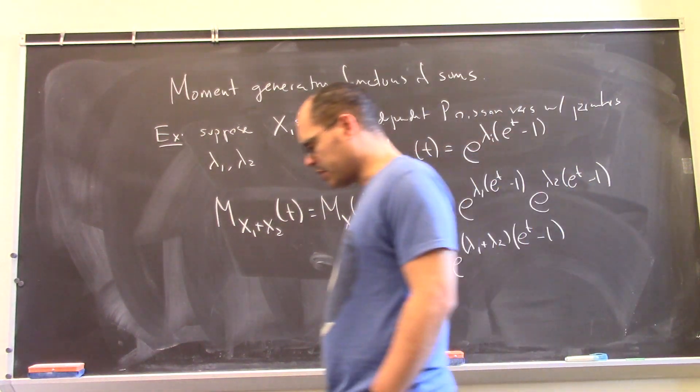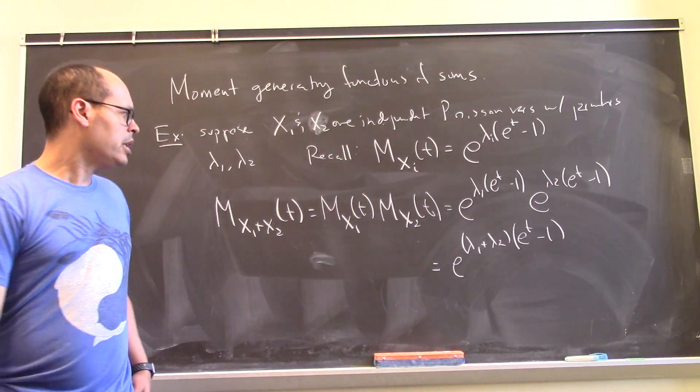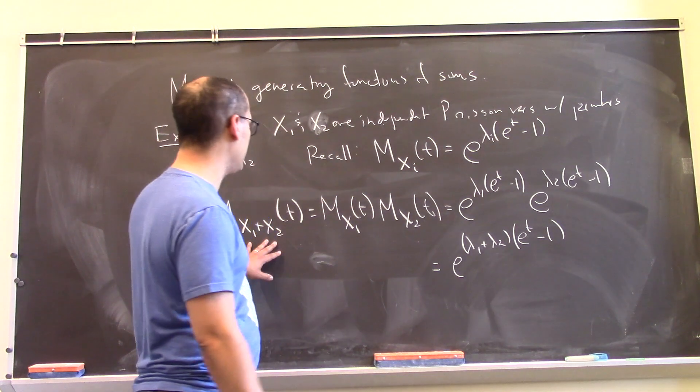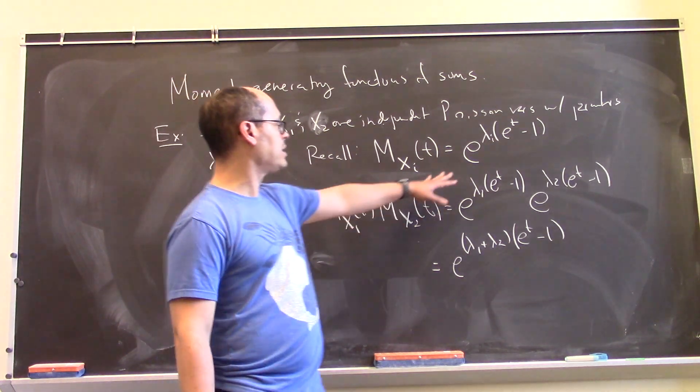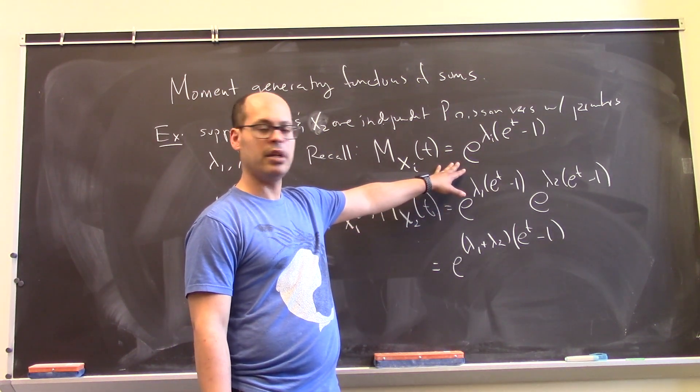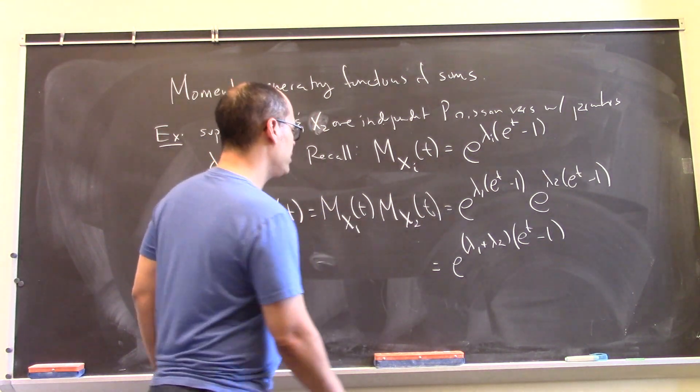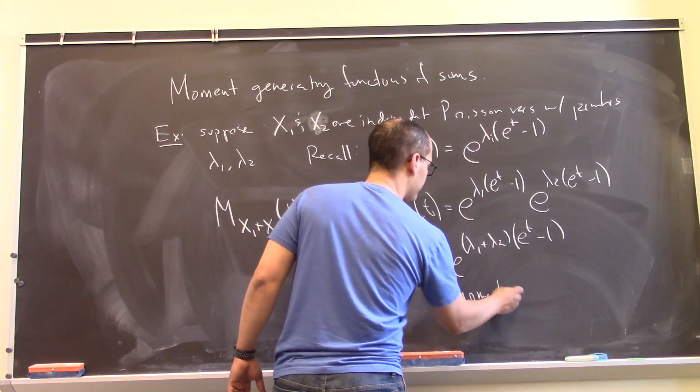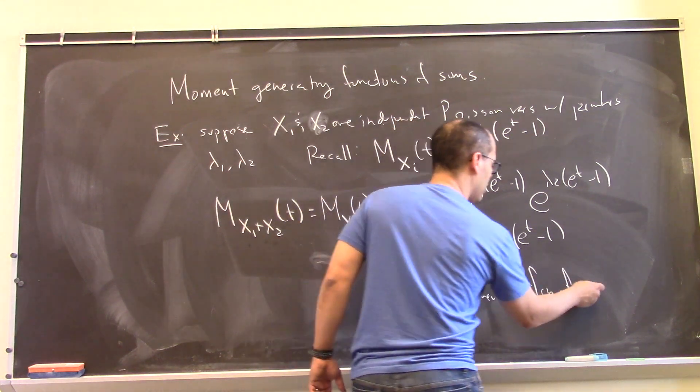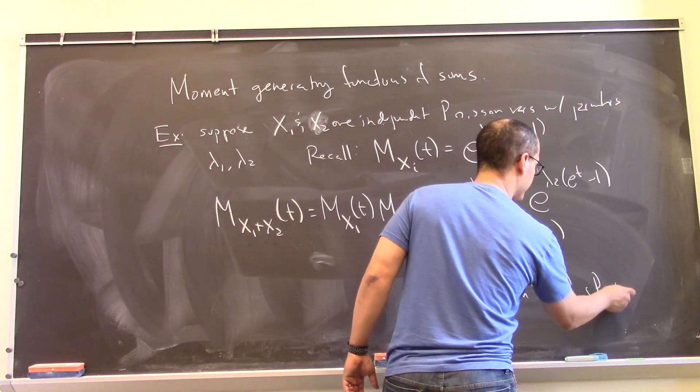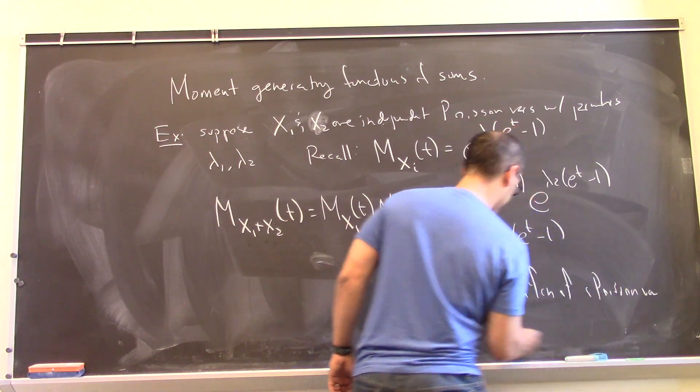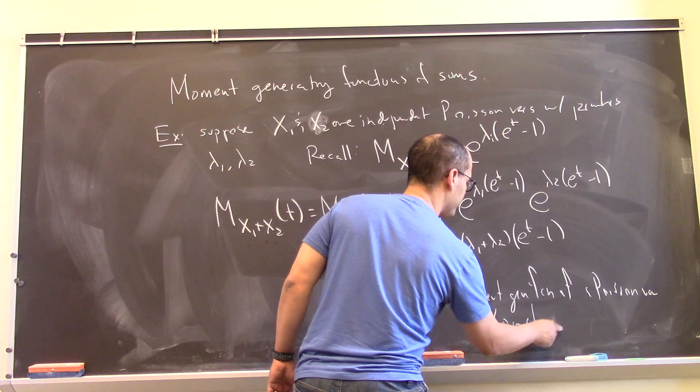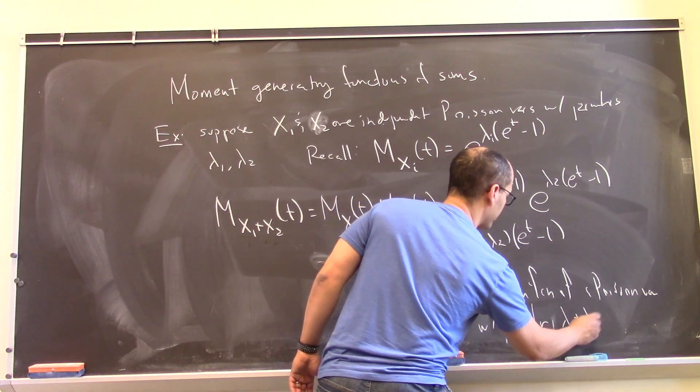Now, an interesting thing has just happened here. If you look at this moment generating function for the sum, you can see that it has the same kind of expression as we started out with. This is the moment generating function of a Poisson variable with parameter lambda 1 plus lambda 2.